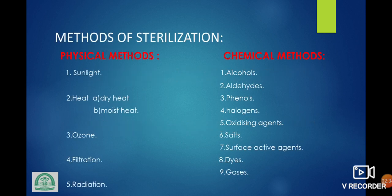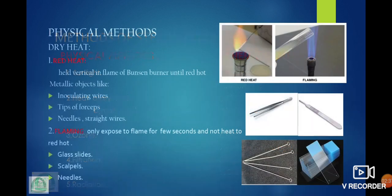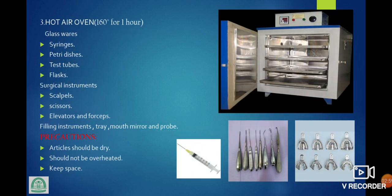Methods of sterilization — two methods: physical method and chemical method. Physical method — dry heat: red heat, flaming, hot air oven. Red heat: instrument held vertical in flame of Bunsen burner until red hot — inoculating wire, tips of forceps, needles, trace wires. Flaming: only exposed to the flame for few seconds and not heated red hot — glass slides, scalpels, needles. Hot air oven: holding period 160 degrees Celsius for one hour — glassware, syringes, Petri dishes, stitch tubes, flasks, surgical instruments like scalpels, scissors, elevators and forceps, filling instruments, trays.